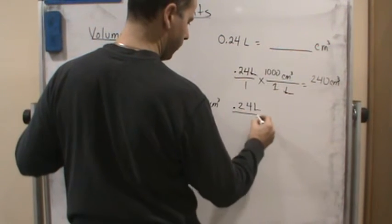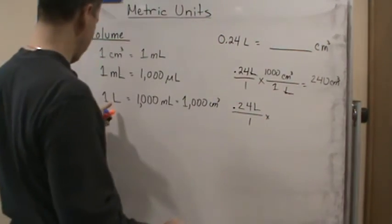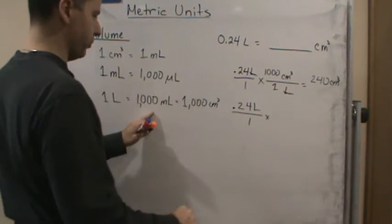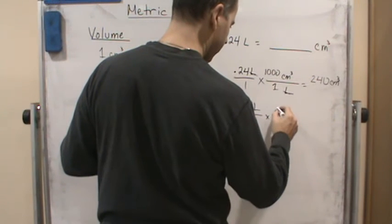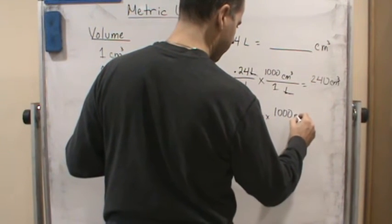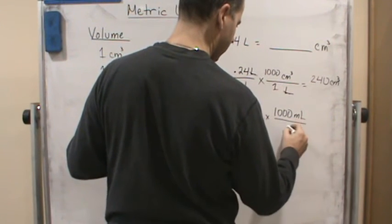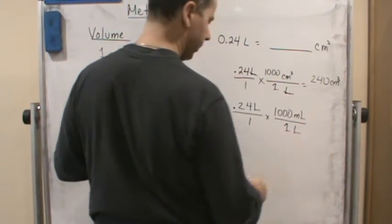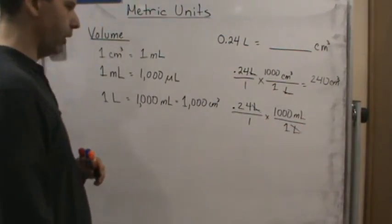So we have 0.24 liters. And let's say we know one liter is equal to a thousand milliliters. Let's start with that. So a thousand milliliters for one liter. So those cancel.